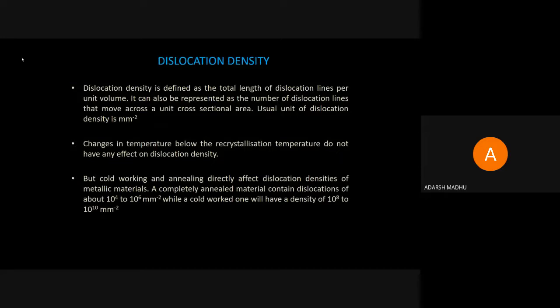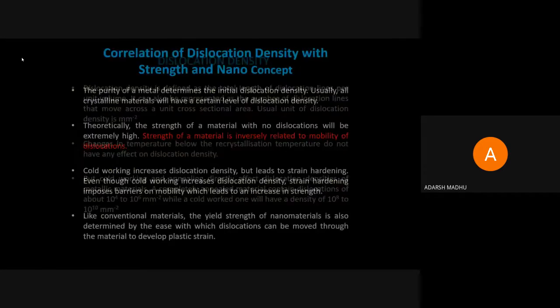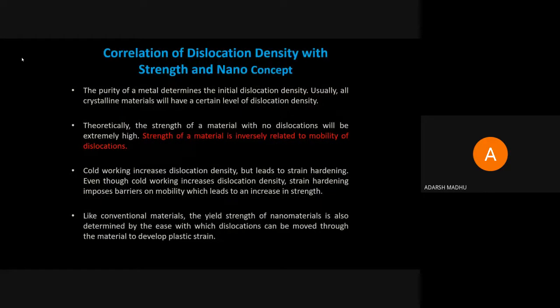So this is dislocation density, which was explained earlier in the class. What is the correlation of dislocation density with the strength of a crystal? And also the explanation of the nano concept — nanocrystalline material — and what is monocrystalline versus polycrystalline material.